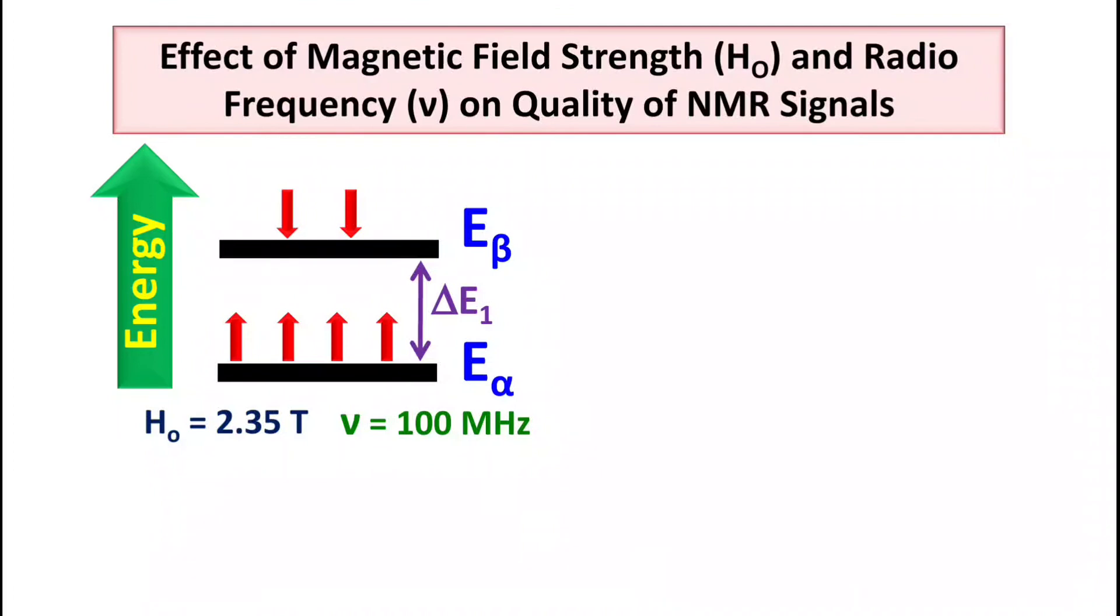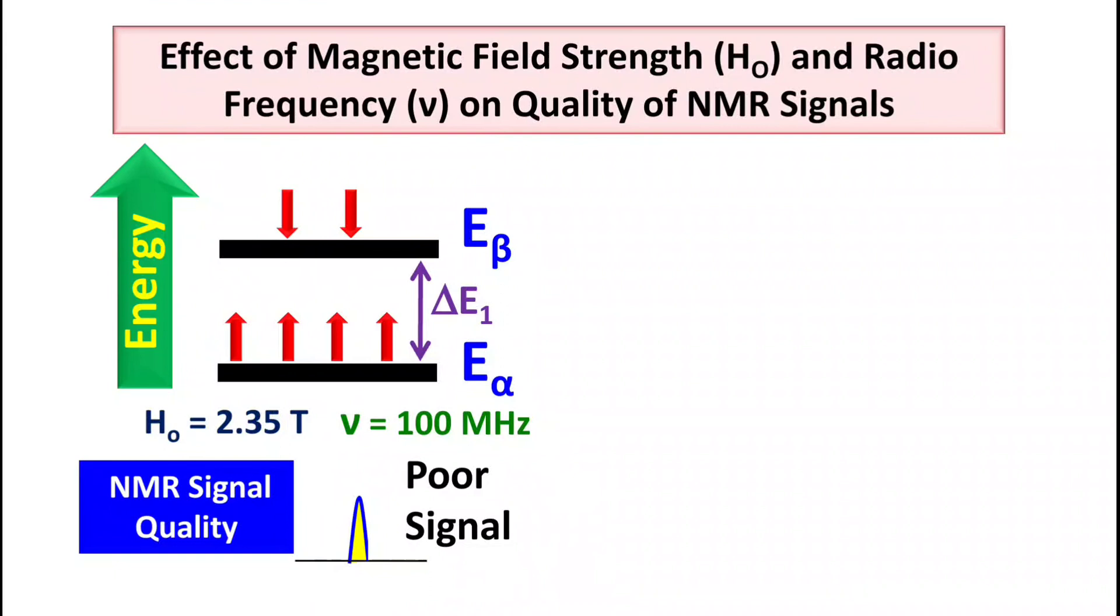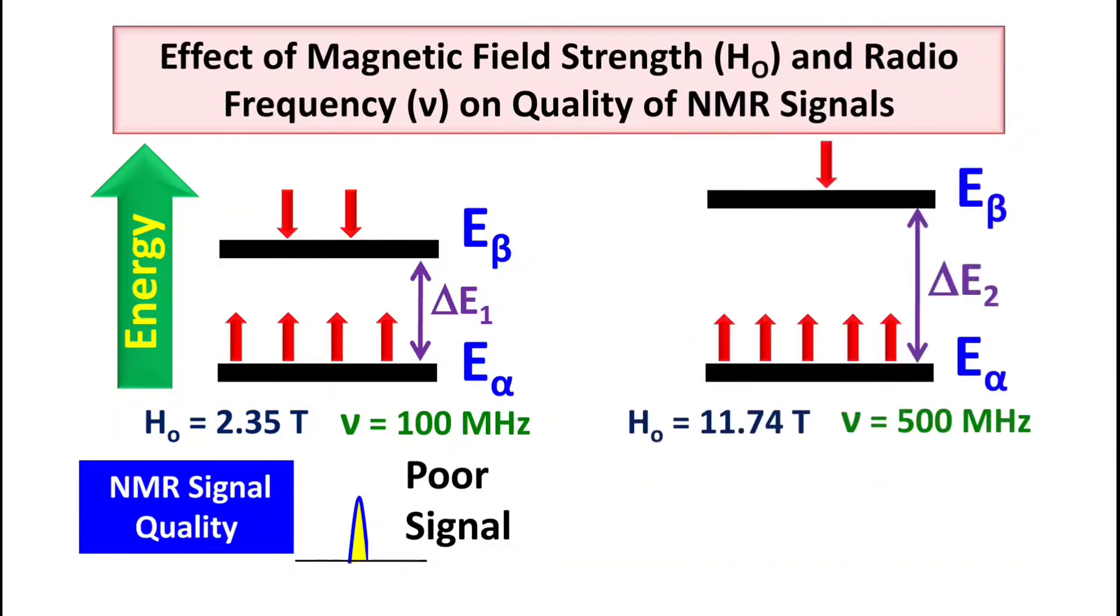Now let's look at what different factors can significantly affect the quality of NMR signal. Here we are using the magnet which has the strength of 2.35 Tesla, and its corresponding radio frequency is 100 megahertz. In this case we will get lower quality NMR signal because we are using low strength magnet. On the contrary, if I use strong magnet with strength nearly equal to 11.74 Tesla and corresponding radio frequency of 500 megahertz, you can see we will get good quality spectra. But the question is how come we got poor signal in case of lower magnet strength and good quality signal in case of higher magnetic field strength.